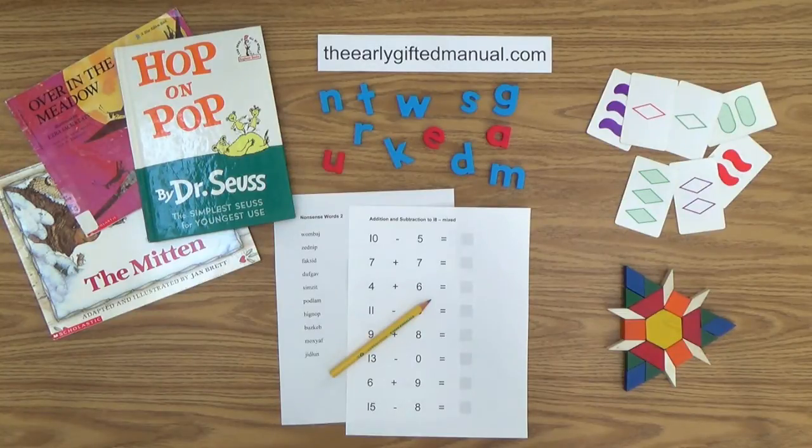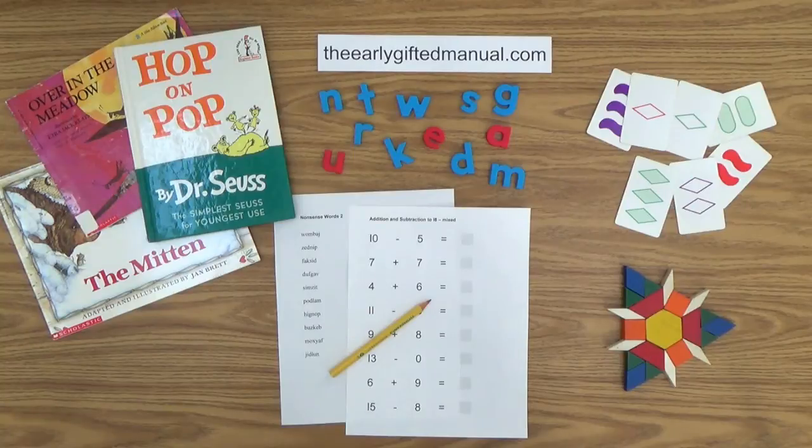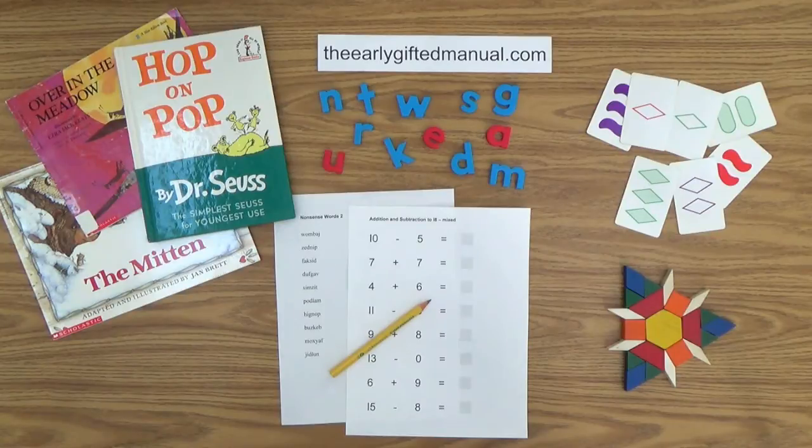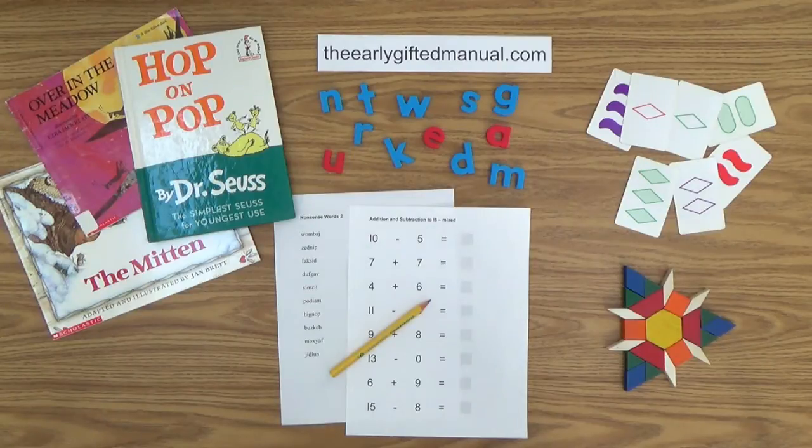As the video lessons are designed to work in conjunction with the program on my website, I ask you to, at some point, click on the URL link in the description box below and this action will take you to theearlygiftedmanual.com. By doing that, you will be able to put this lesson and all of the video lessons here on my channel in the proper context of the total program that I am presenting to you and your child.